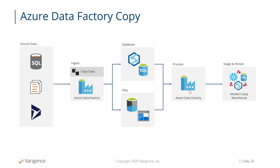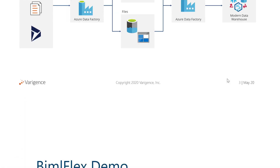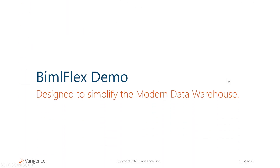We're creating Snowflake stored procedures to take the data from this landing area and process the data into the modern data warehouse or into its relevant data warehouse. As you can see, that gives you the ability to easily switch between different modern data warehouse environments. So you can easily switch using the same metadata, just different configurations, between trying out Synapse, Snowflake, or SQL database, depending on what your preference is. So with that, let's quickly go into a demonstration and I'll show you how to configure that in BumbleFlex.